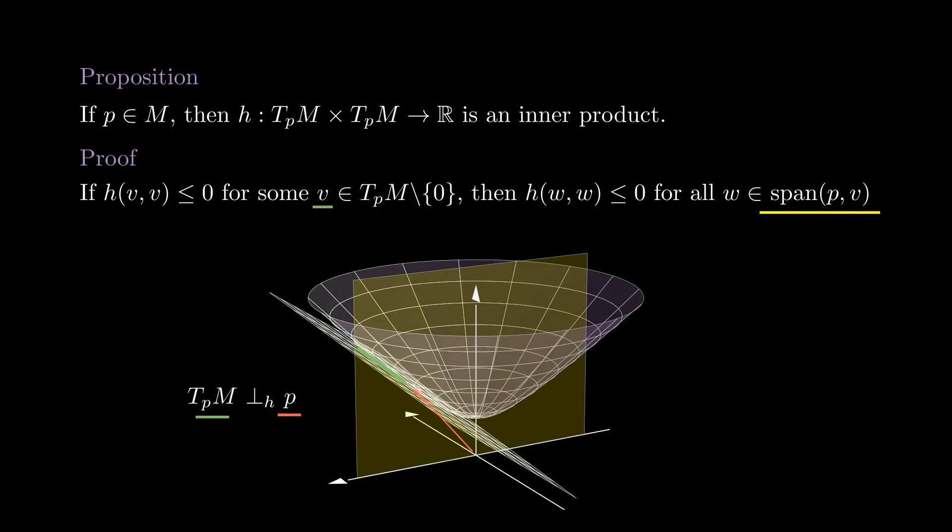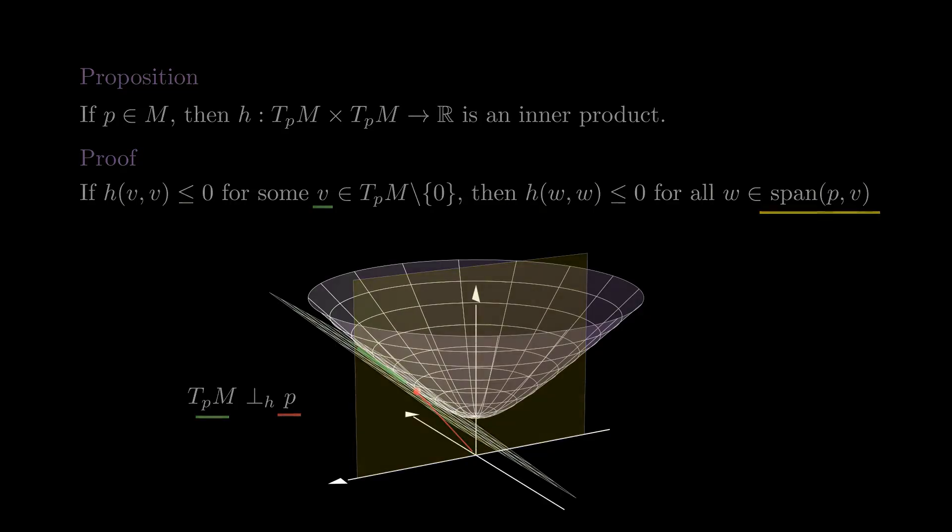This is impossible because by dimensionality, this plane intersects R^n along a line, and h is positive definite on R^n. This is a contradiction because h would be both positive definite and non-positive definite along that line. This proves that h is an inner product when restricted to T_p M.